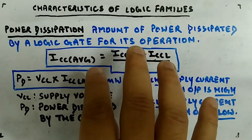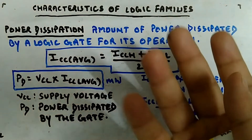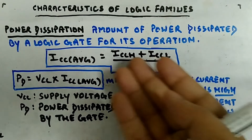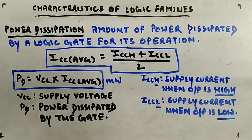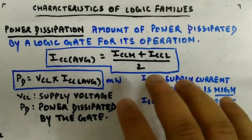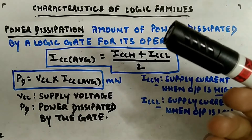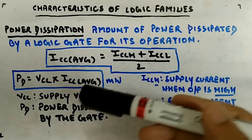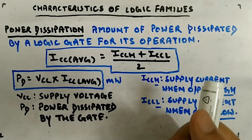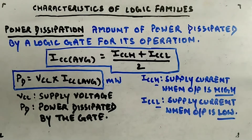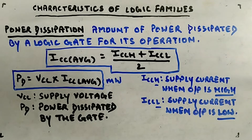Sometimes the average current is given directly; sometimes the high and low supply currents are given separately. You calculate their average to get the average supply current during normal operation, then multiply by the supply voltage to get the power dissipated by the gate. We'll do numerical questions later after covering all the characteristics.